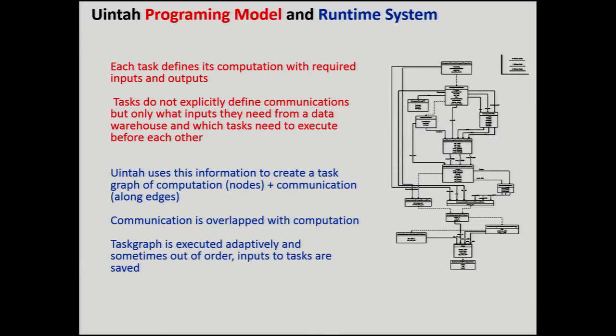The programming model is really easy. Each task defines its computation with the required outputs and inputs. You don't explicitly define communications — there's no MPI in the user code. Users just say what they want from a data warehouse, which tasks need to execute before each other, and what goes back into the data warehouse. Uintah does all the rest, creates a task graph for each computational mesh patch, communications automatically overlap with computation, and we execute this task graph in an adaptive fashion. The task graph is often quite simple — here's part of the ICE task graph.